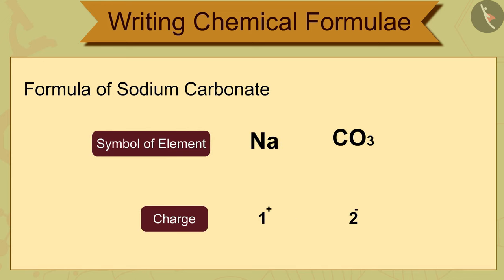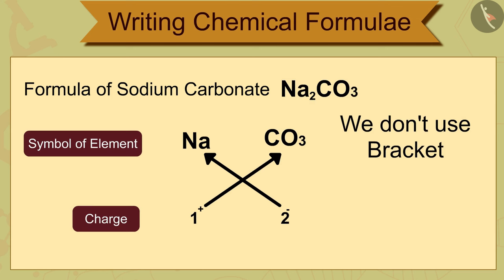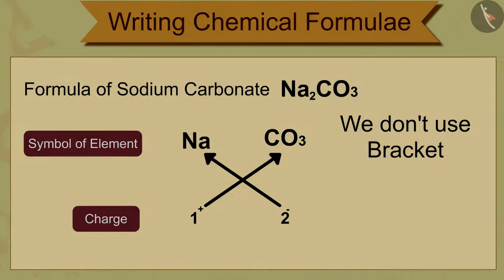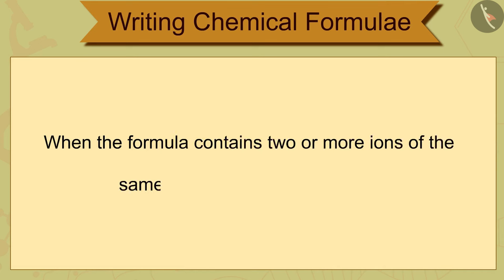For example, in one molecule of sodium carbonate there are 2 ions of sodium ion Na+ having 1 atom, and only 1 ion of polyatomic carbonate ion CO3 2-. Therefore we do not use brackets for the polyatomic ion CO3 2- in its formulae Na2CO3. When the formula contains 2 or more ions of the same ion, we use brackets for them.